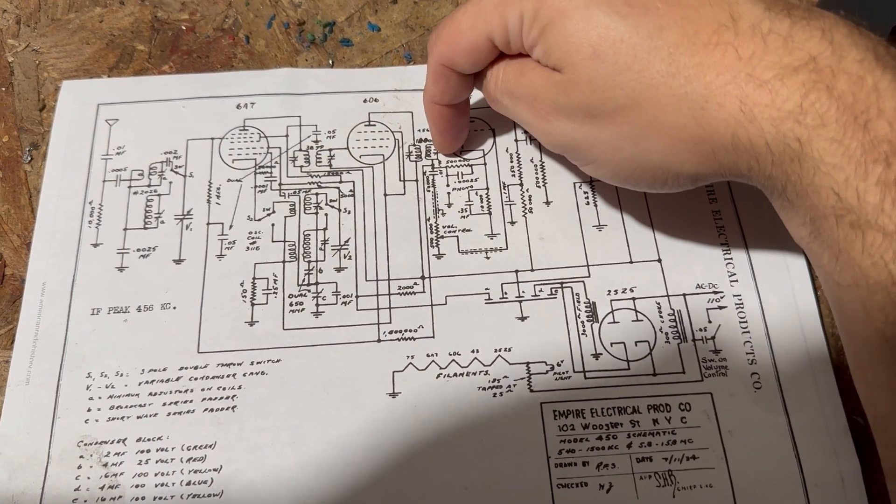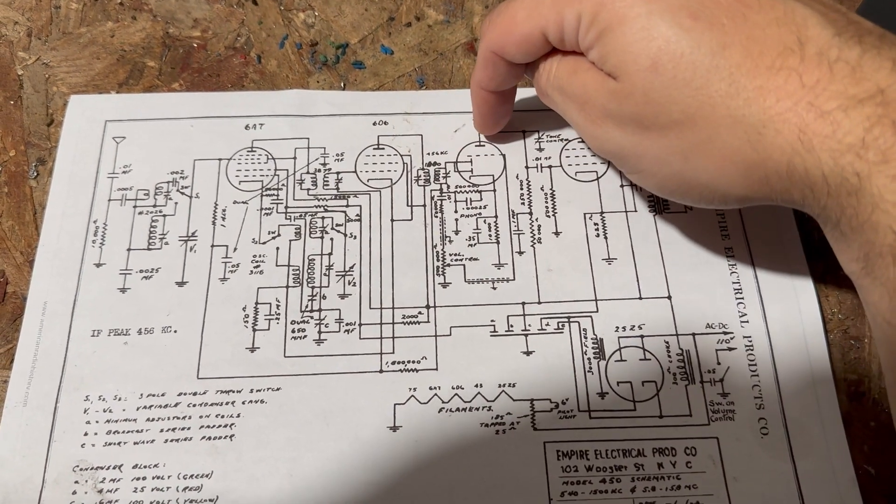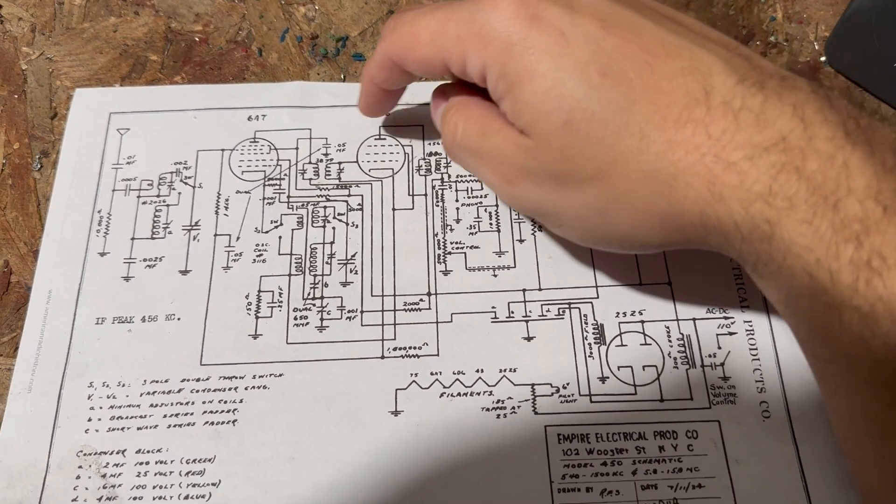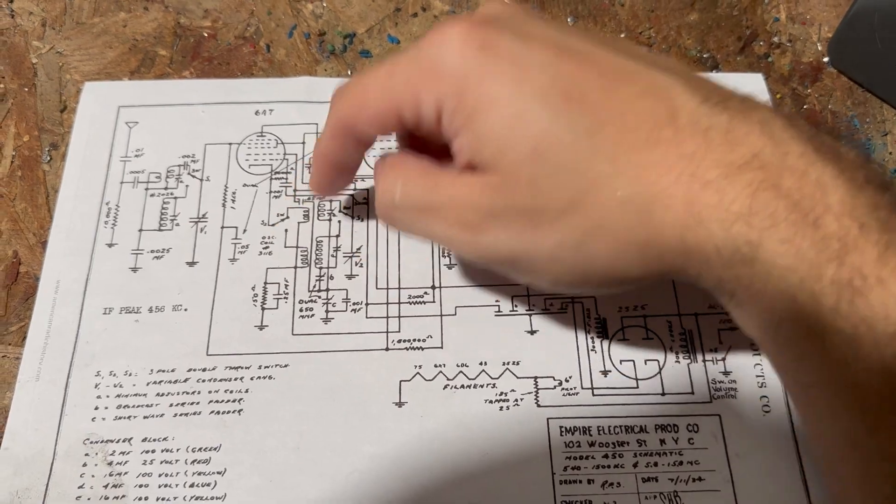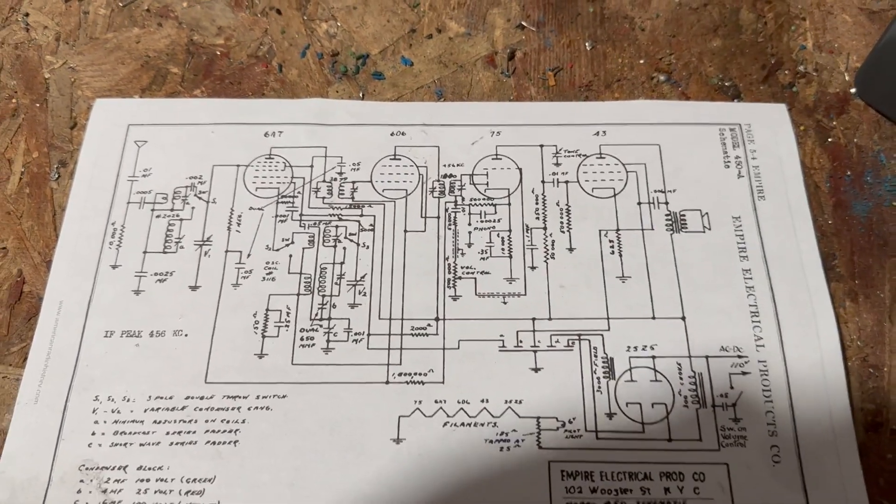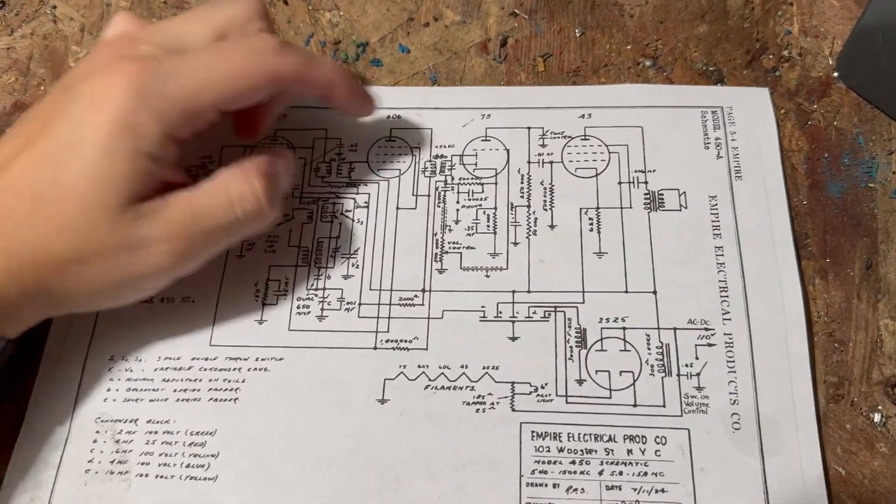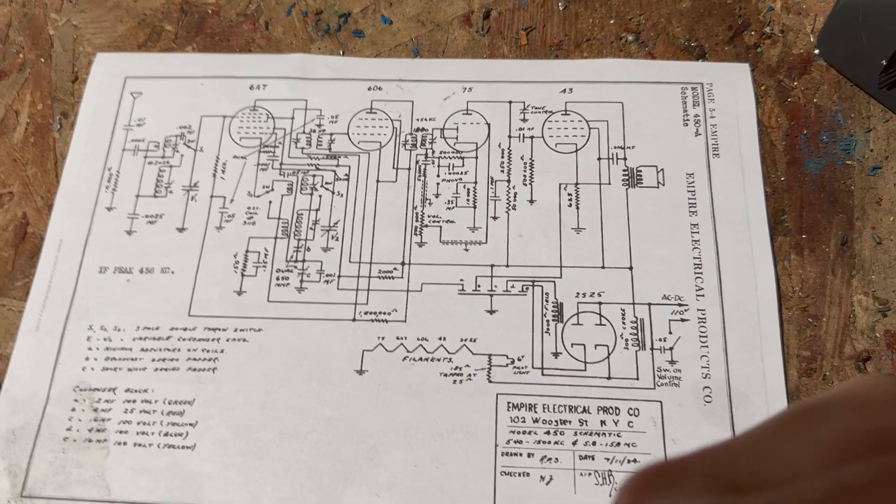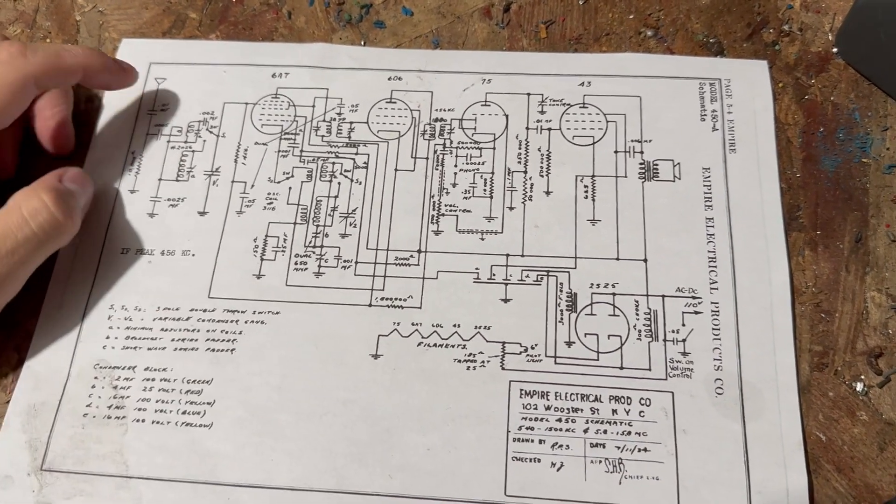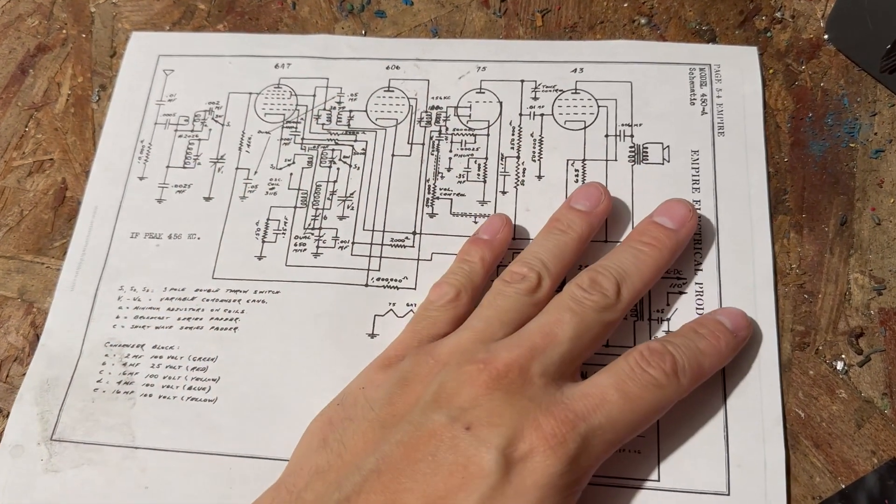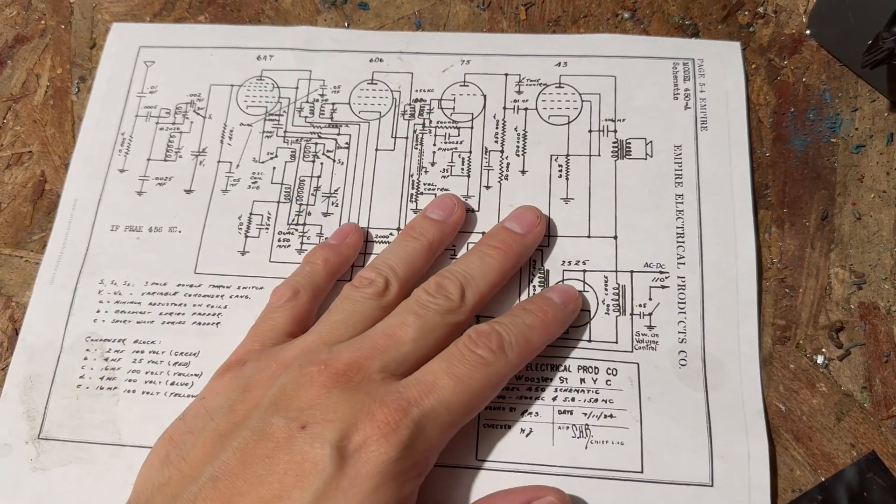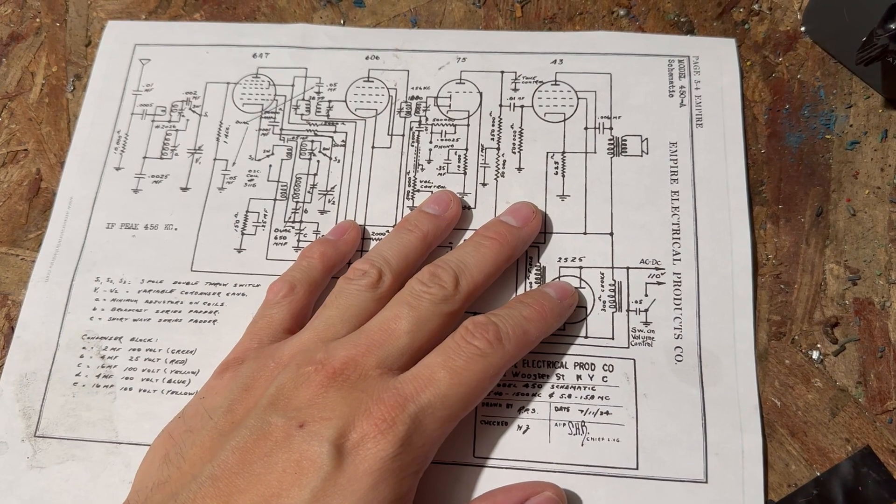You got it going through this IF transformer and so on. Now it is a little more complicated because here you have the oscillator, the internal oscillator, which then mixes with the signal and it essentially converts the incoming signal into something that the radio can understand.